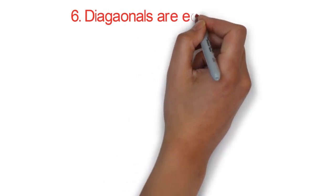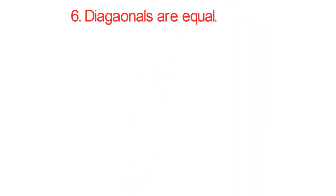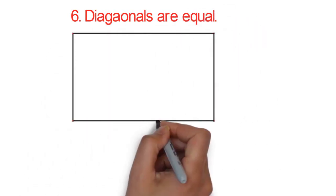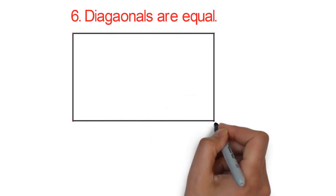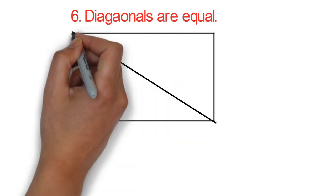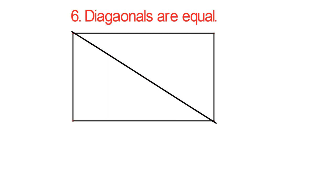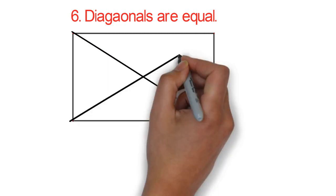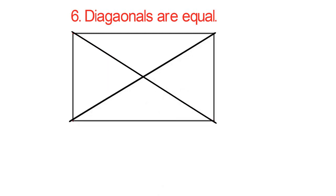Six: diagonals are equal. What do I mean by this? If I draw two diagonals across the rectangle — can you see that? — if this diagonal is eight centimetres, the other diagonal is also eight centimetres. That means the diagonals are equal; they have equal length.